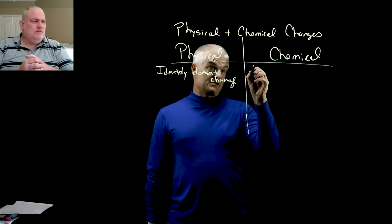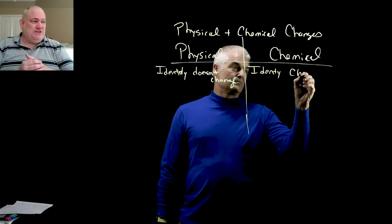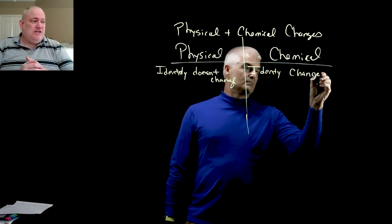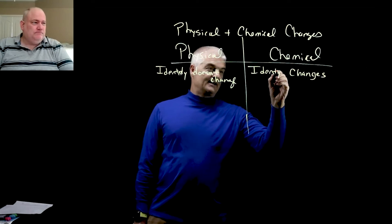So let's say a physical change is where the identity of something doesn't change. And I assume then chemical change means the exact opposite, the anti-definition we like to say, where chemical change is where the identity does change.